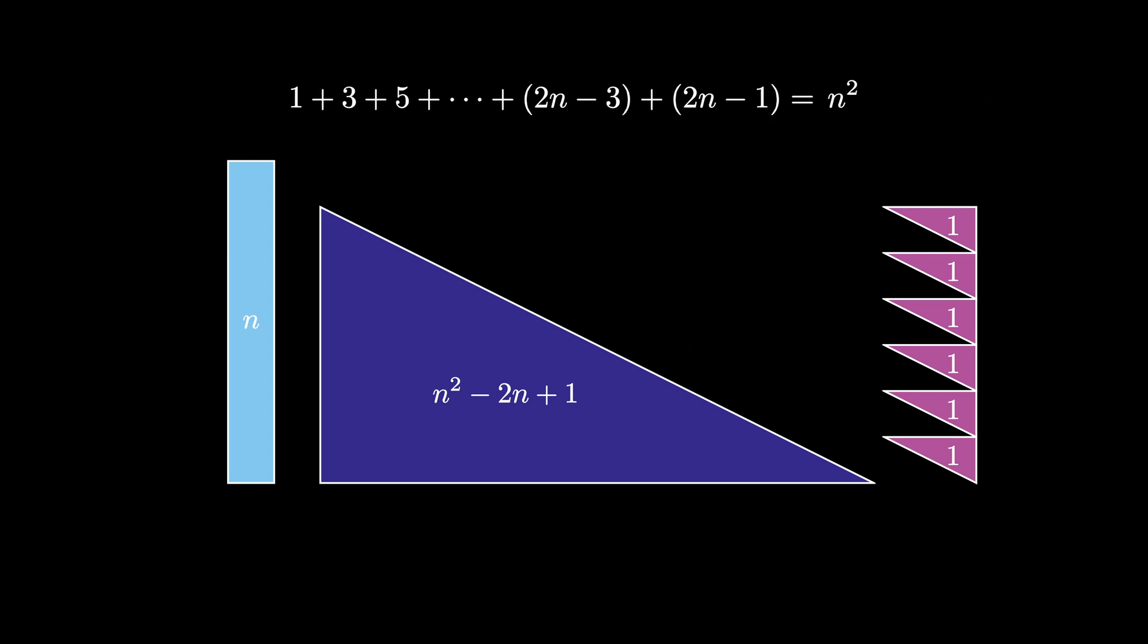To write this more compactly, we have that the sum where k ranges from 1 to n of 2k minus 1 must equal n squared. This is a classic formula, but we proved it using areas of rectangles and triangles.